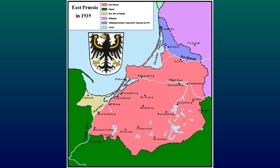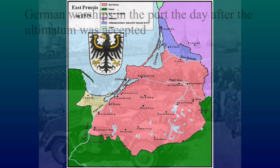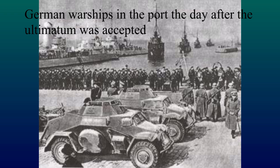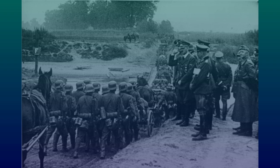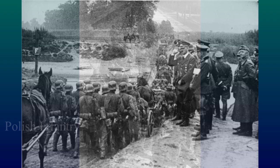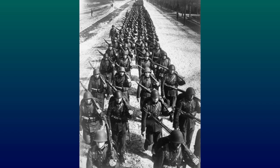On March 20, 1939, Germany sent an ultimatum to Lithuania, demanding they cede territory in the Klaipida region over to Germany, or Lithuania would be invaded. On March 22, Lithuania signed a treaty with Germany agreeing to cede over the territory. In 1940, Lithuania was annexed by the Soviet Union. On September 1, 1939, Germany invaded Poland. Britain and France declared war on Germany on September 3.